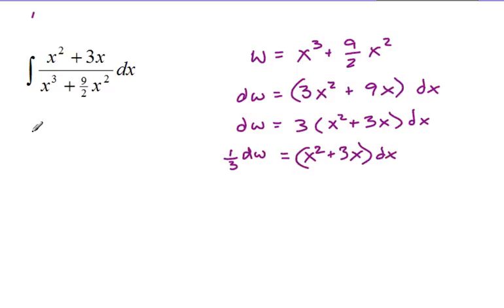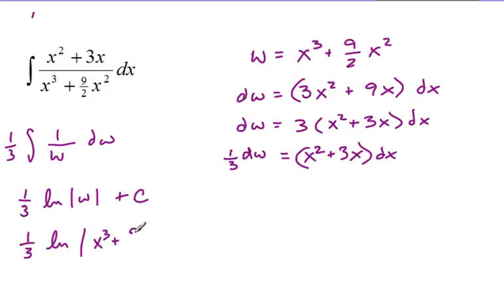When I rewrite this integral, my w is the denominator, 1 over w. My x squared plus 3x dx gets replaced with a 1 third dw. Now I've got my very easy antiderivative: 1 third natural log of w. Then I can just replace the original, which is x cubed plus 9 halves x squared plus c.